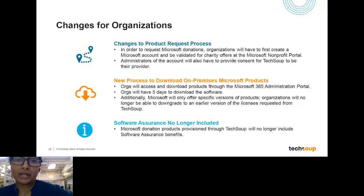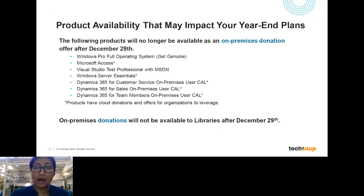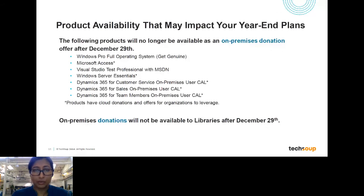Another area I want to call out is some things that might impact your year-end plans. We know many organizations have their calendar year coincide with their fiscal year. As you're thinking about planning for next year, be aware that there are a few products that are actually no longer going to be available after this calendar year. Those products include Windows Pro full operating system (a genuine license), Windows upgrades (which will still be available), Microsoft Access, Visual Studio Test Professional, Windows Server Essential, and some Dynamics licenses.